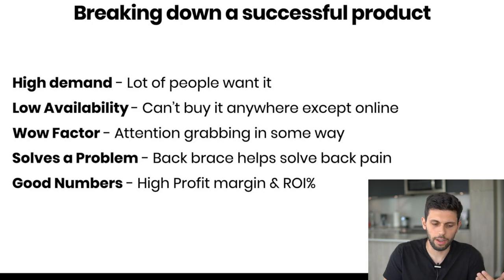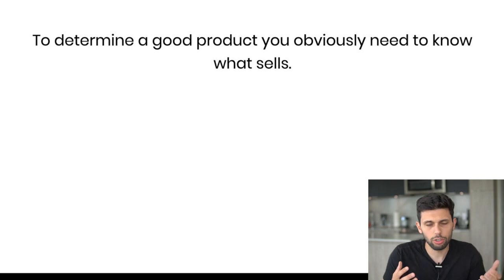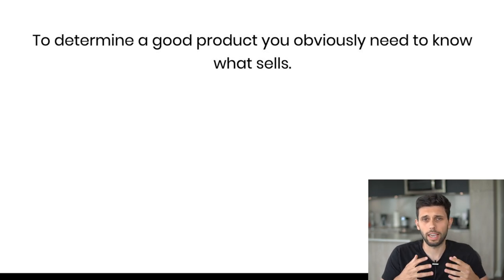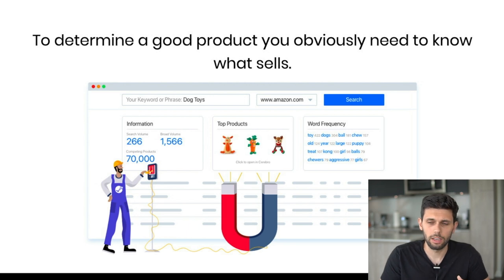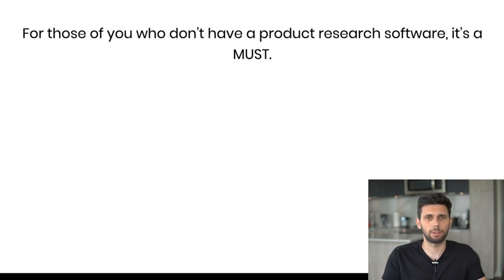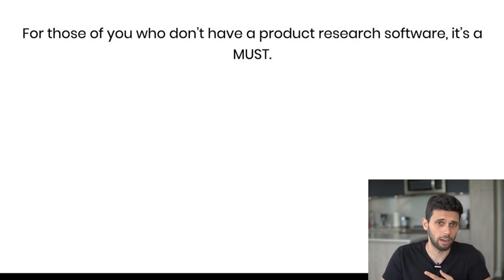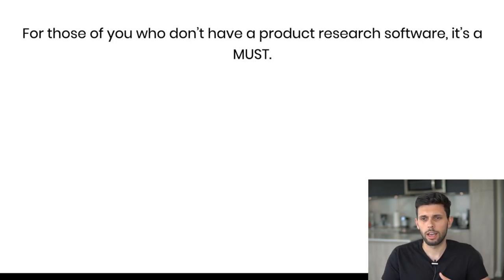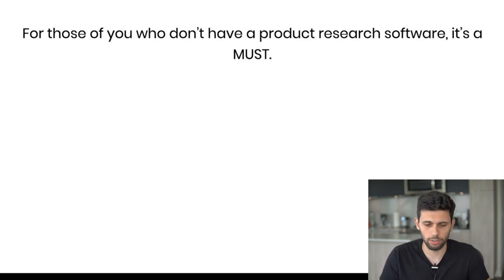To determine a good product, you obviously need to know what sells and how much money each thing is making. Luckily on Amazon, we can do that with certain software. The software I'm going to be using today is Helium 10 — for product research, keyword research, and really determining what is good and what isn't. For those of you who don't have product research software: it is a must. If you've been trying to do product research without it, you're wasting your time. You'll get a product that doesn't sell well, has low demand, and you'll ultimately lose money on inventory.